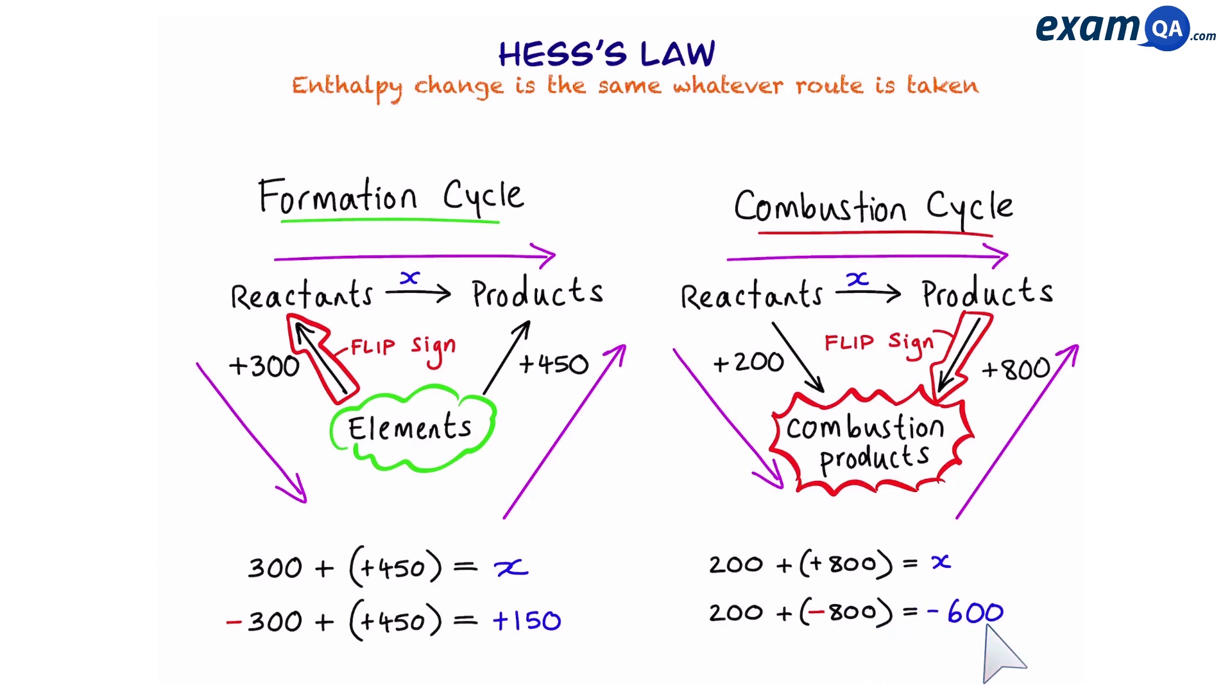So these are the two types of cycles that you need to be aware of for Hess's law. In formation cycles, we have elements at the bottom and we point up. In combustion cycles, we have combustion products at the bottom and we point down. Once you've made your cycle, then you want to see which arrow is going the wrong way. In formation, it's always going to be the one on the left and in combustion cycles, it's going to be the one on the right. Once you've identified the arrow that's going the wrong way, all you have to do is flip the sign and then you can add them together.